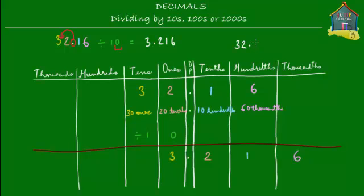Now if I give you the same number, 32.16, and ask you to divide it by one hundred, can you guess how many places the decimal point will move? It's pretty easy — all you have to do is move it two places to the left, because there are two zeros in one hundred. So 32.16 divided by 100 gives you 0.3216, after moving the decimal point two places to the left.